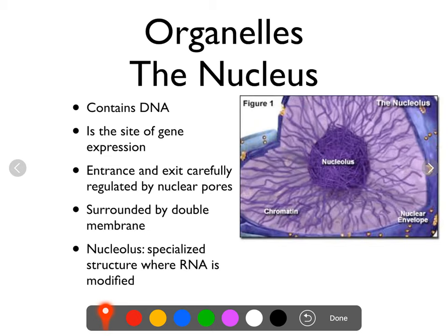Most of the nucleus contains chromatin, but there is a region that also has quite a lot of RNA, called the nucleolus. The nucleolus is not a membrane-bound structure — it's just a region of the nucleus where ribosomes are made and tested before they go out into the rest of the cell. The area between the nuclear membrane and the nucleolus is called the nucleoplasm.